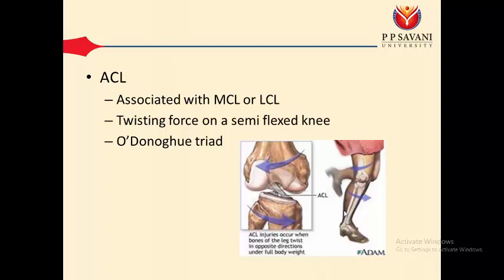ACL injury is normally associated with medial collateral ligament injury — most probably MCL injury. Along with medial collateral ligament and ACL damage, there is also a chance of medial meniscus damage. When all three are damaged together, it is called the unhappy triad, and it is very common.